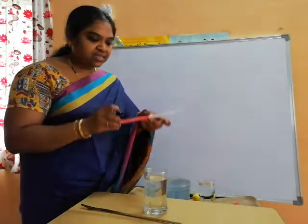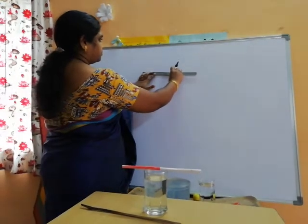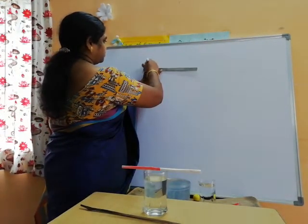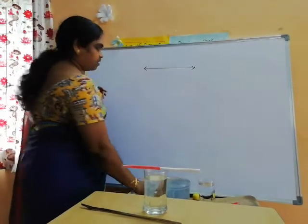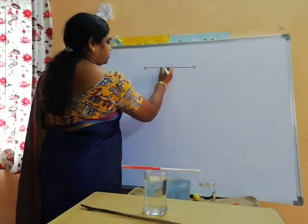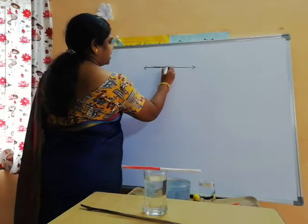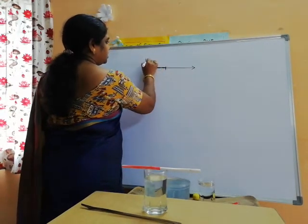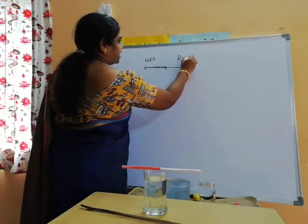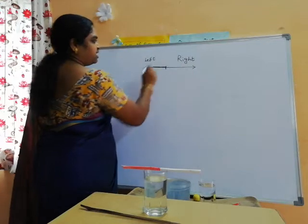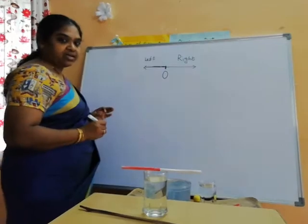I will draw the same example on the board. Observe. This part is the wet color, and this is the dry part. The wet part should be held to the left side and the dry part is towards the right side. The point of separation of the two colors is our zero.